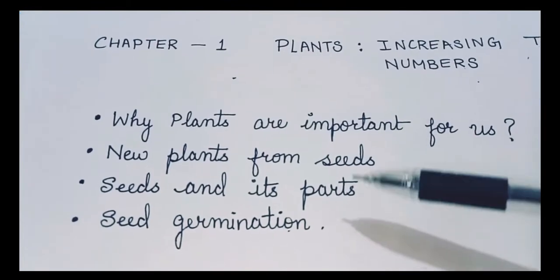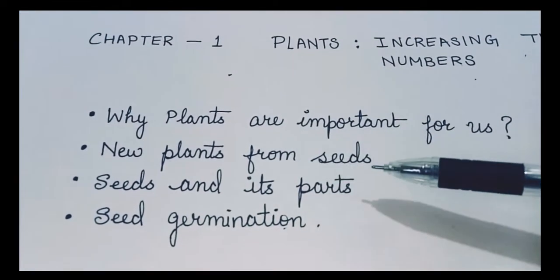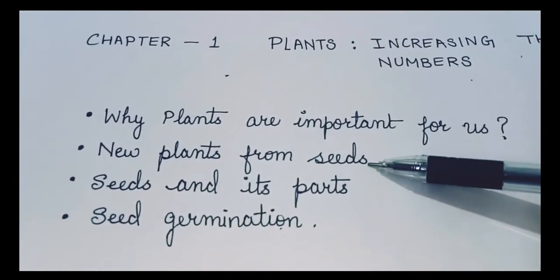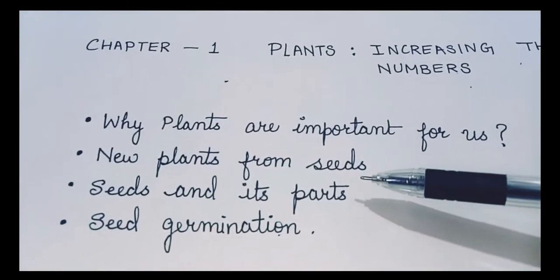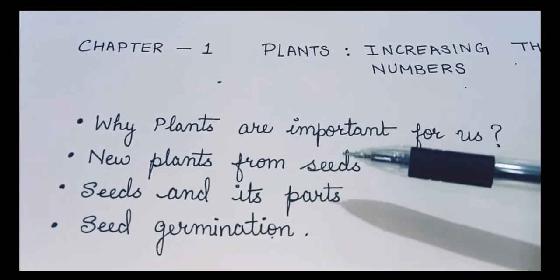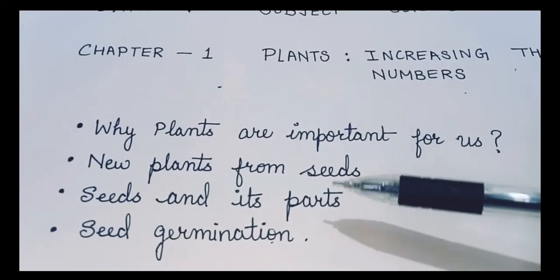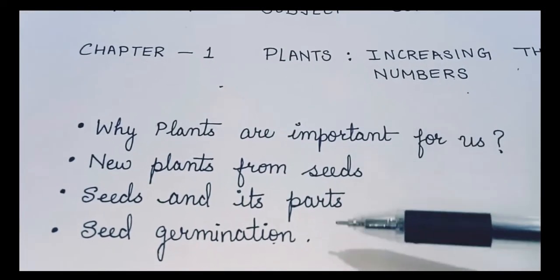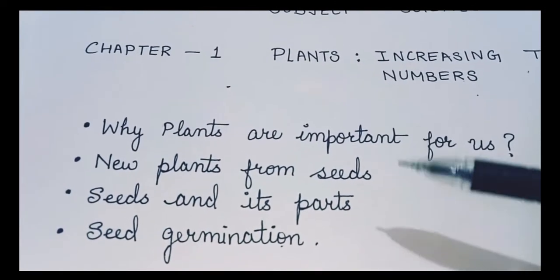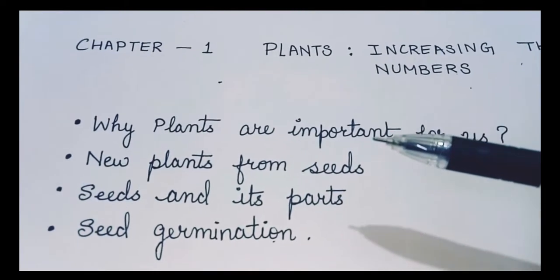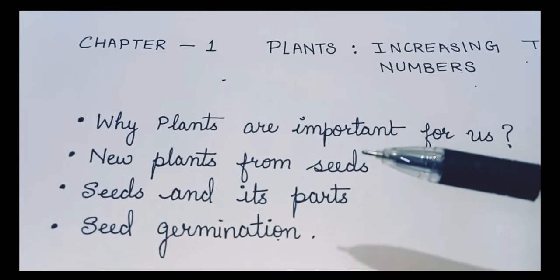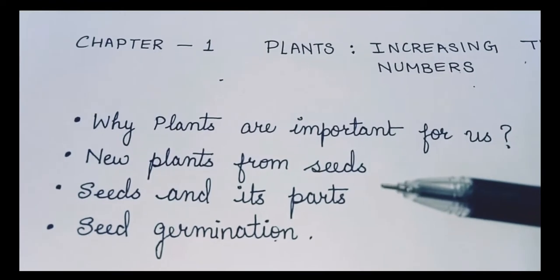Now the second point, that is new plants from the seeds. So we have to learn about it. If you have seen a plant, so you can see there are many seeds on that plant, in the fruits and in the flowers also. So why does the plant produce so many seeds? They do so because all the seeds do not grow into a baby plant or a new plant. Why so?